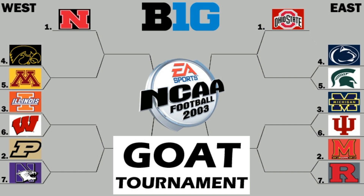If you have no idea about these teams and you're doing the Sim Pick Challenge, don't worry — in just a second I'm going to go over the top players for each team and give you the overall rating for each team on the game. This is NCAA Football 2003 but it's the 2002 college football season, so the rosters are from 2002. Ohio State is number one in the East, Penn State will be the four seed hosting Michigan State, Michigan is the three seed hosting Indiana, and Maryland will host Rutgers — two teams that actually weren't even in the Big 10 at this time, but we're going with today's conferences.